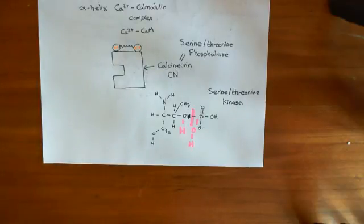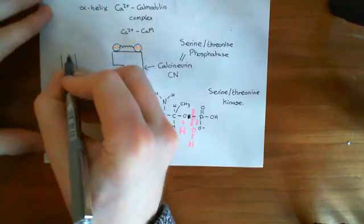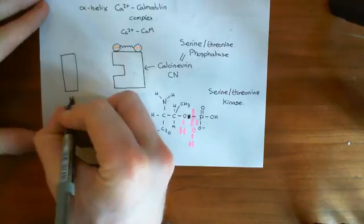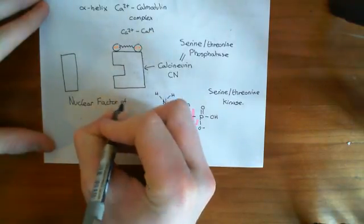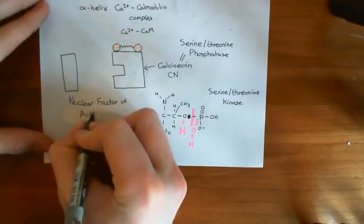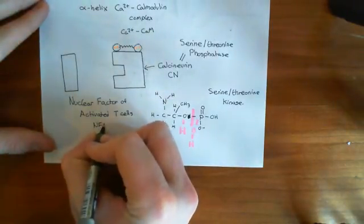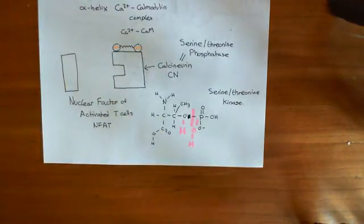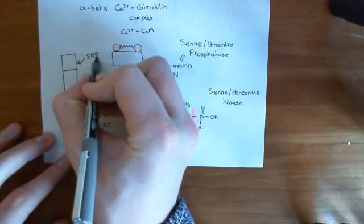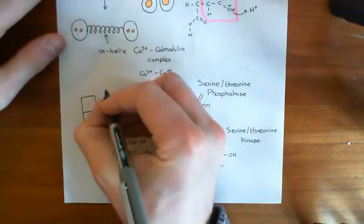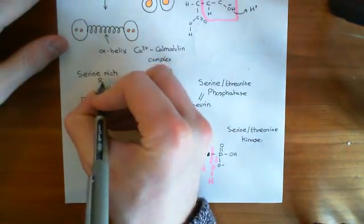So why is this important? Well, there is an important transcription factor in T-cells' cytoplasm known as the nuclear factor of activated T-cells, often abbreviated to NFAT. The nuclear factor of activated T-cells has a special region known as the SRR, which stands for serine-rich region, meaning this portion of the protein has a huge number of serines in it.